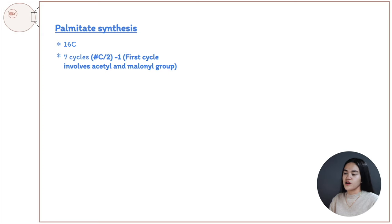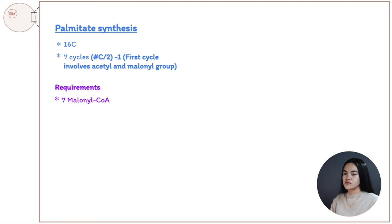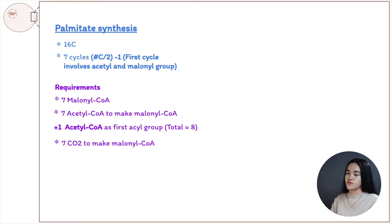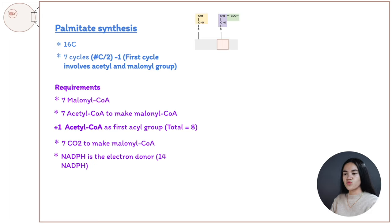For the overall seven cycles of palmitate synthesis: we need seven malonyl-CoA, and seven acetyl-CoA to make malonyl-CoA. But since the first acyl group comes from acetyl-CoA directly, the total acetyl-CoA required is eight. We also need carbon dioxide in the form of bicarbonate, seven ATP, and NADPH as the electron donor. Only fourteen NADPH are needed because the final release by thioesterase uses hydrolysis, not reduction.